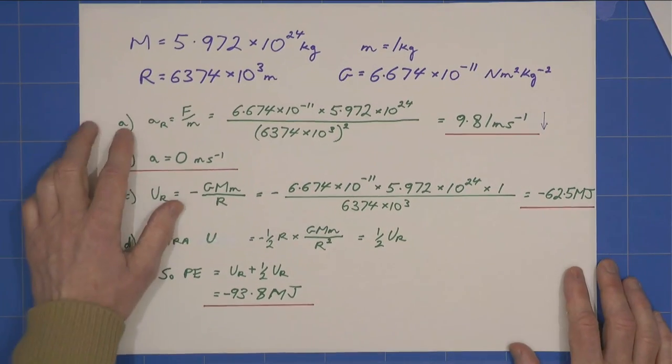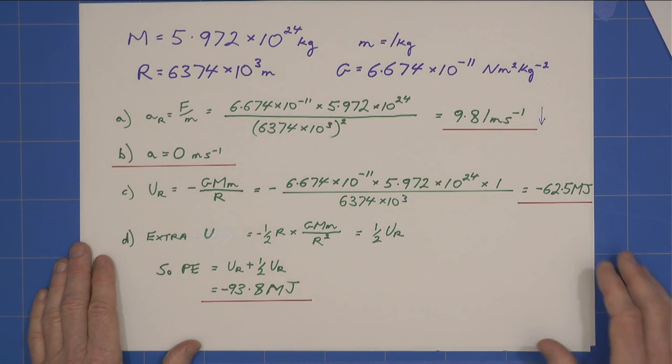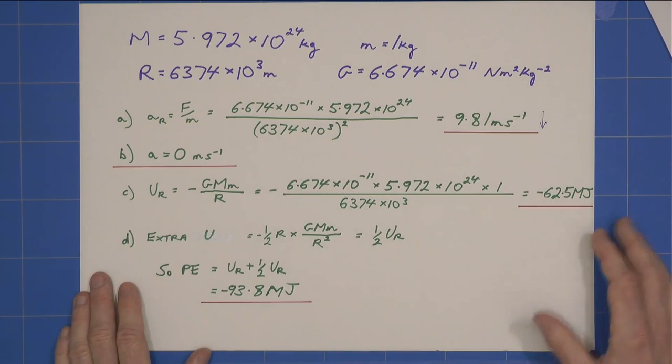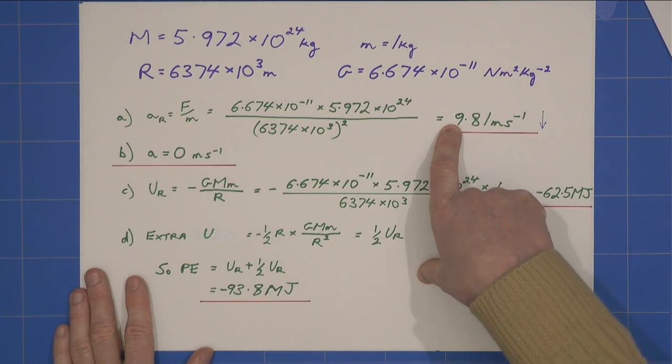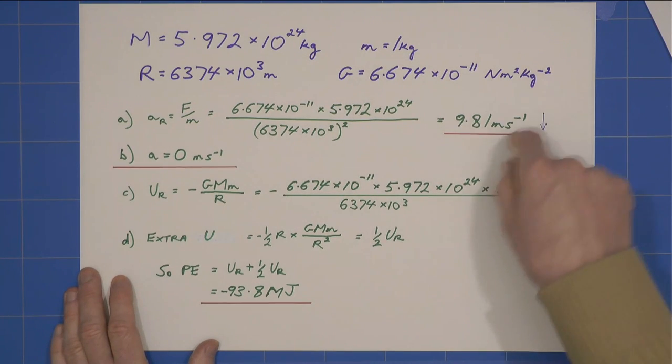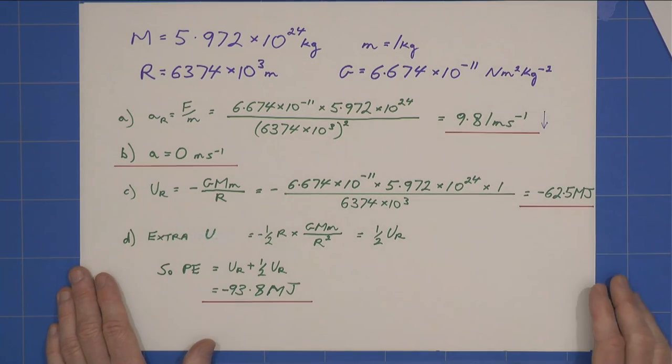So, part A, the acceleration is force divided by mass. At the surface of the earth, plug these figures, we get that. Strictly, you're going to say, well, it should be minus 9.81, but as he discusses in his lectures, we take the gravitational acceleration to be a positive, but we know it's acting downwards.